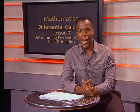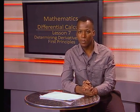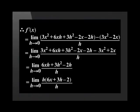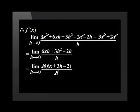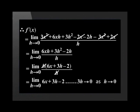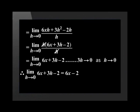We have multiplied out all the brackets and added the like terms. Now we need to simplify the fraction. In order to do this, we need to factorize. h is the common factor. We take it out and are left with h(6x plus 3h minus 2) in the numerator and h in the denominator. We now cancel the h in the numerator with the h in the denominator and end with the limit as h tends to 0 of 6x plus 3h minus 2. As h tends to 0, 3h will tend to 0, so the limit is equal to 6x minus 2. Please note that the limit as h tends to 0 is dropped at this change. Therefore, the derivative f dash x of f of x equal to 3x squared minus 2x is equal to 6x minus 2.